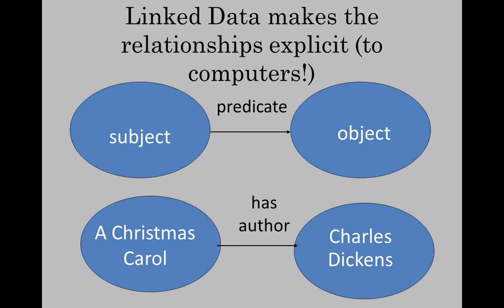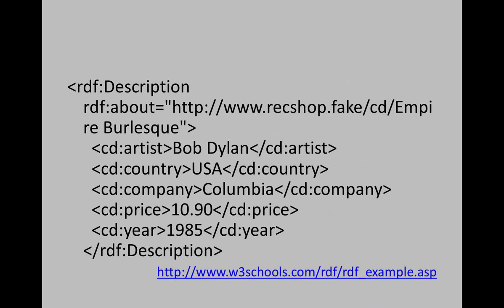If you read anything about linked data and RDF, you will hear the phrase 'triples.' RDF is based on triples, which are statements. They're called triples because they have three parts: subject, predicate, and object — just like sentences. The subject and the object are two entities linked together by the predicate, which is the relationship between them. So if you're describing the resource 'A Christmas Carol,' the relationship is 'has author,' and the other entity linked by that relationship is Charles Dickens. Ideally, these relationships would be encoded in the RDF code using URIs — Uniform Resource Identifiers — that link to various sources.